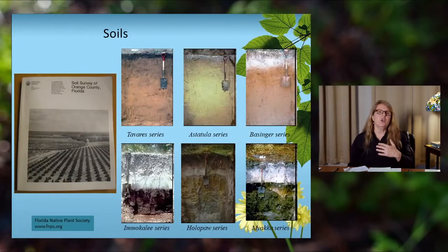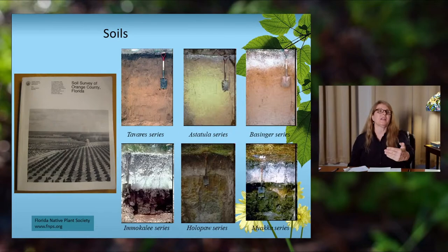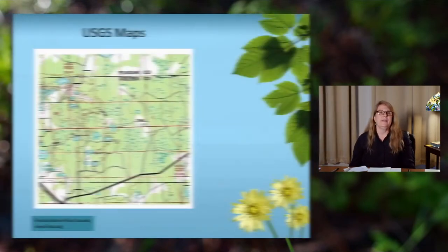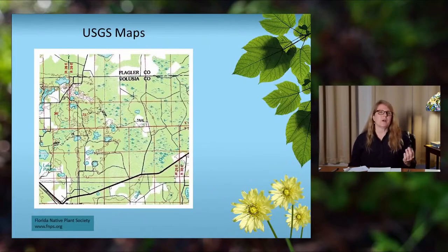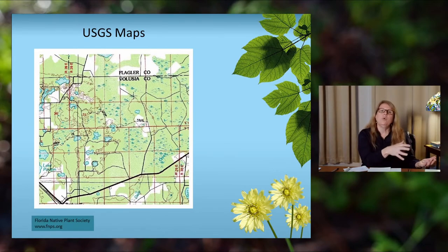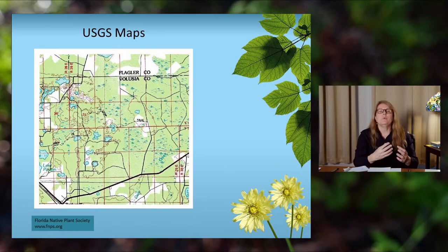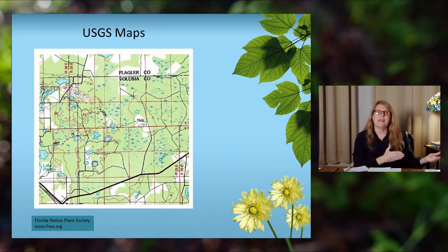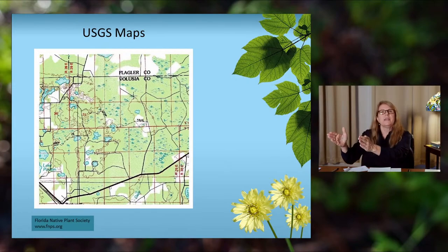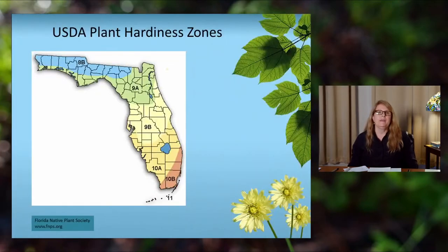Study your soils and know the pH — that'll help you select plants that will thrive. USGS maps are helpful to find out what was on your site before the subdivision was there, what native ecosystem existed. That'll give you clues: if you know it was a sand hill, you can go to the sand hill community plants and those will thrive there. Also know your plant hardiness zone.